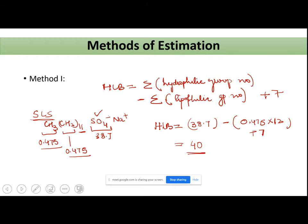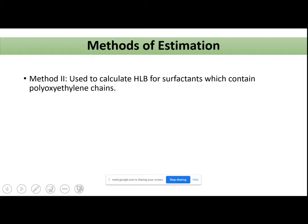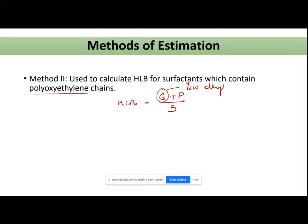Going to the next method — Method 2 is used primarily for surfactants which contain a polyoxyethylene chain. This method states: HLB = (E + P) / 5, where E is the percentage by weight of the ethylene oxide chain, and P is the percentage by weight of the polyhydric alcohol group.